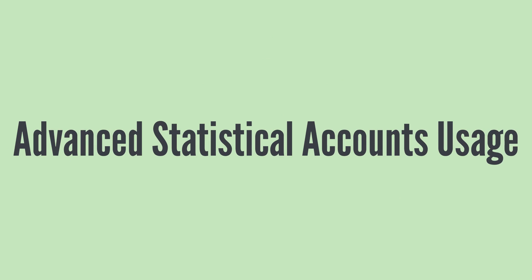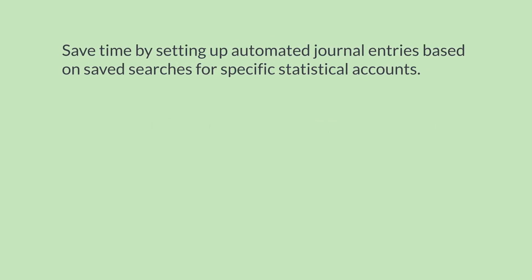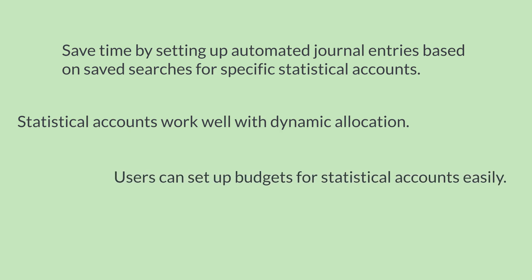What are some other things you can do with statistical accounts? For one thing you can set up a schedule based on a saved search that automatically creates journal entries using data from a specific statistical account — this can save you a great deal of time. Statistical accounts also integrates well with dynamic allocation if you use that feature. And finally if you want to set up budgets for your statistical accounts you can do that as well — simply set up a new budget and select the appropriate statistical account on the budget record.